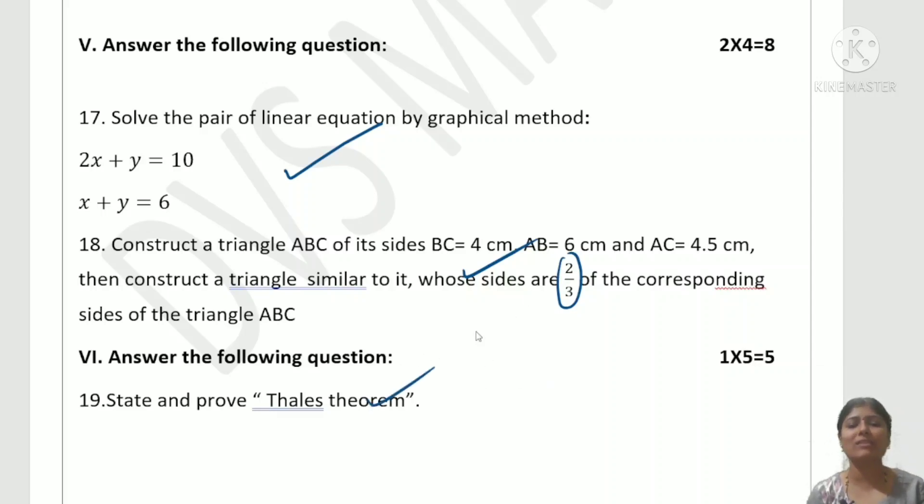Finally, the 5-marks question is Thales theorem, also known as BBT - Basic Proportionality Theorem.